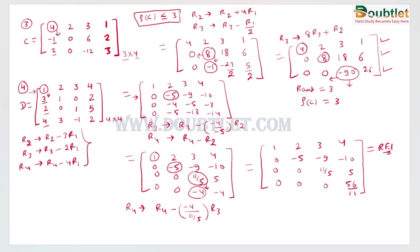Now we count the non-zero rows. Row one is non-zero, row two is non-zero, row three is also non-zero, and row four is also non-zero. So we can say that the rank of matrix D is four.